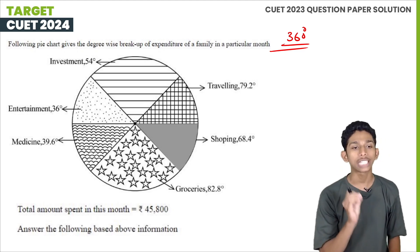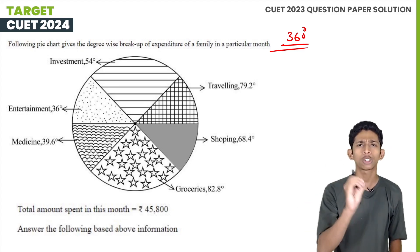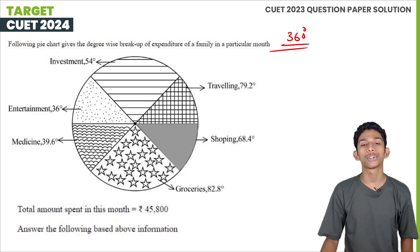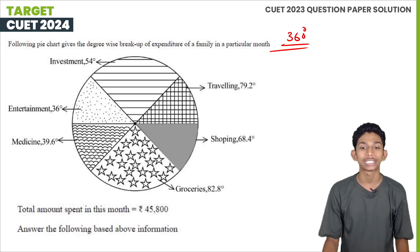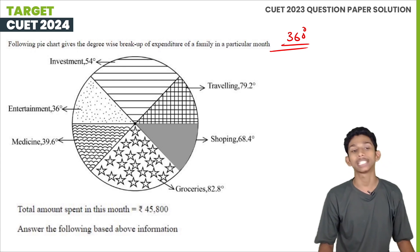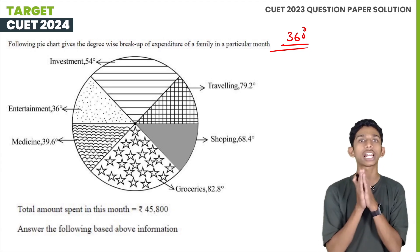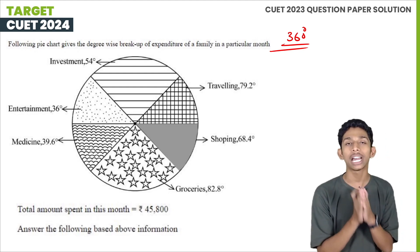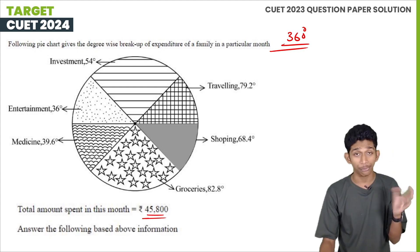The following pie chart gives the degree-wise breakup of expenditure of a family in a particular month. Investments is 54 degrees. Traveling is 79.2 degrees. Shopping is 68.4 degrees. Groceries is 82.8 degrees. Medicine is 39.6 degrees. Entertainment is 36 degrees. The total amount spent in this month is 45,800.